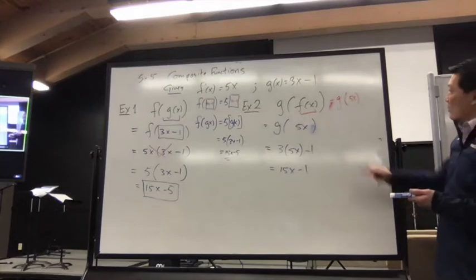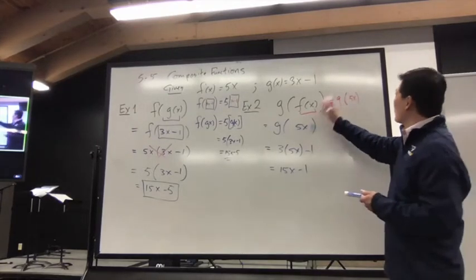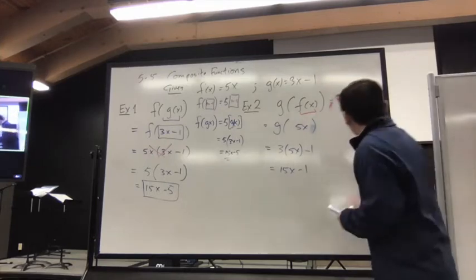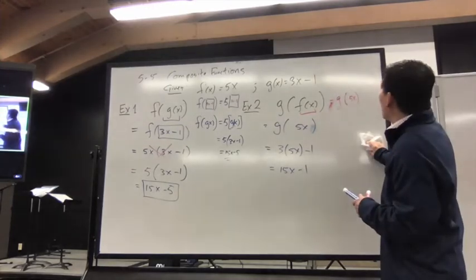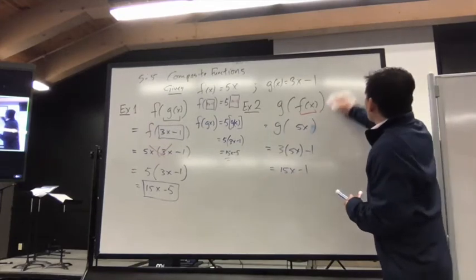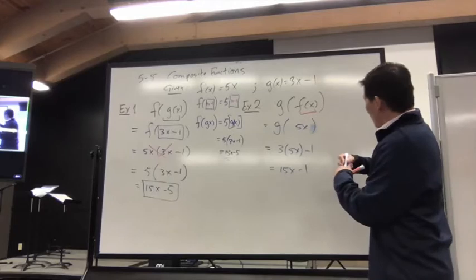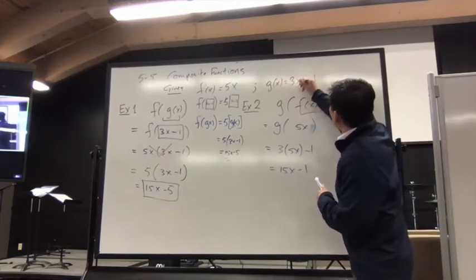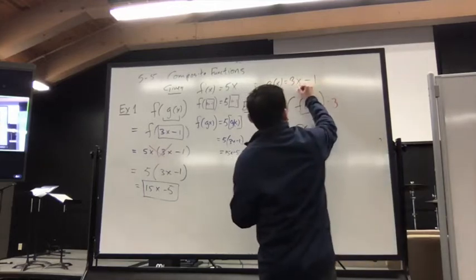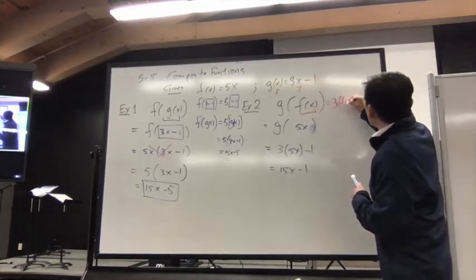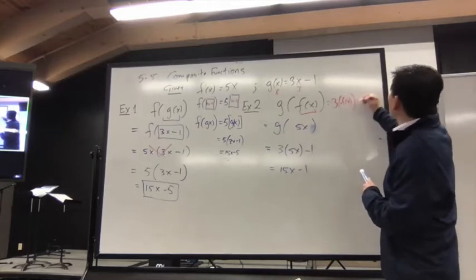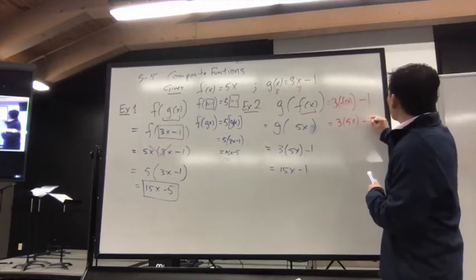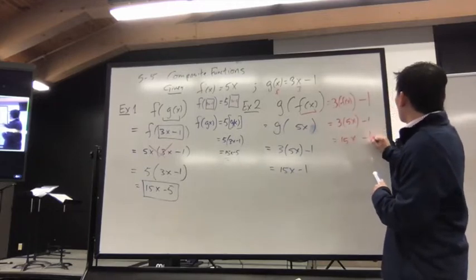One way to think about it: G of F of X, and F of X is 5x. So G of something is 3 times something minus 1. So 3 times F of X minus 1 — that's 3 times 5x minus 1, which gives 15x minus 1.